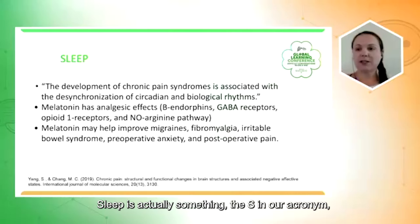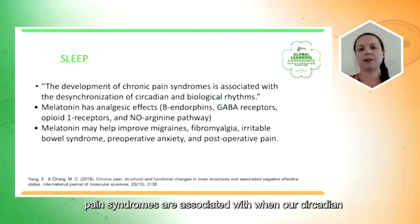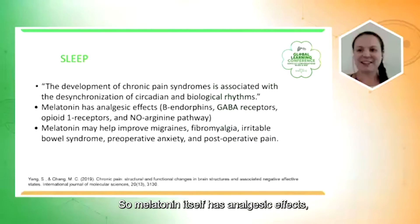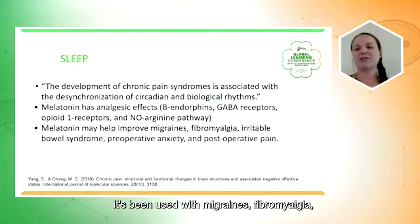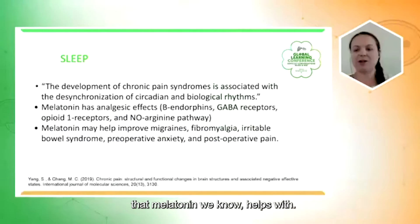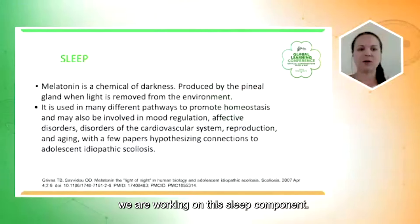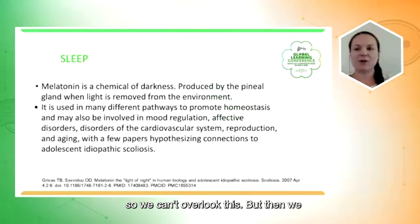Sleep — the S in our acronym — can have a lot of impact because chronic pain syndromes are associated with circadian and biological rhythms losing their synchronization. Melatonin itself has analgesic effects and can help with pain and inflammation. It has been used for migraines, fibromyalgia, irritable bowel syndrome, anxiety, and postoperative pain. It's a chemical of darkness — we won't get it unless we close our eyes and sleep. There are so many things melatonin can regulate and affect in the system, so we can't overlook this component.